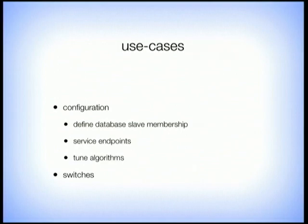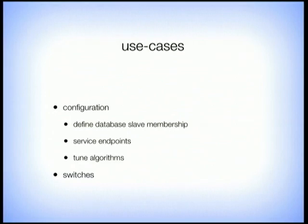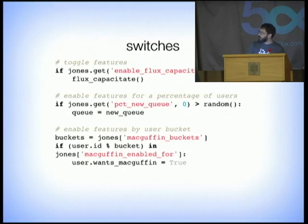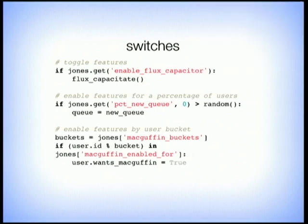Going back to use cases — configuration is really what ZooKeeper was built for. It's a good way to define database slave membership, say you're adding or removing nodes; you can do that in real time and your app will see the new slaves. You can store a list of service entry endpoints so your app knows which host to talk to. Or to tune algorithms — say you've got a complex machine learning algorithm and you've figured out new values; you can update them without pushing code.